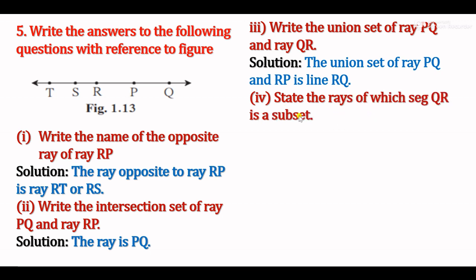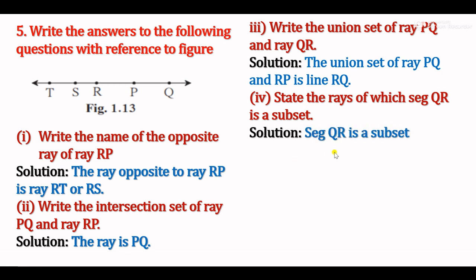Sub-question 4: State the rays of which segment QR is a subset. Segment QR is a subset of many rays. You can write ray RP, ray RQ, ray SP, ray SQ, ray TR, ray TP, or ray TQ. The answer is: segment QR is a subset of ray QS and ray QT, or also ray QP or ray QR.